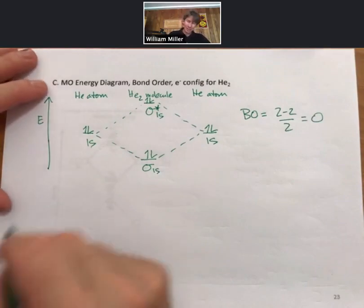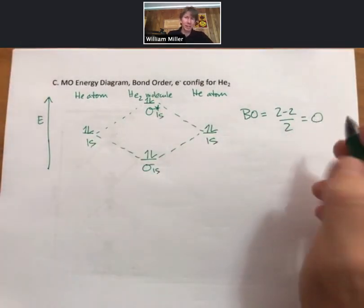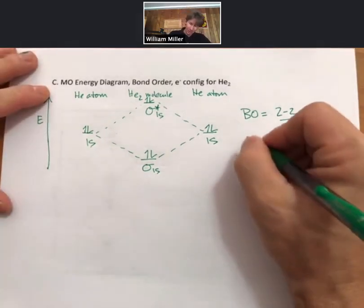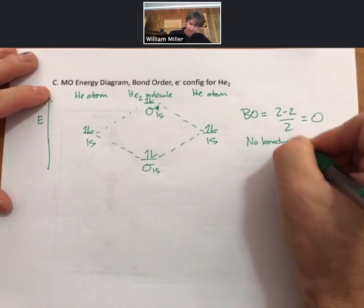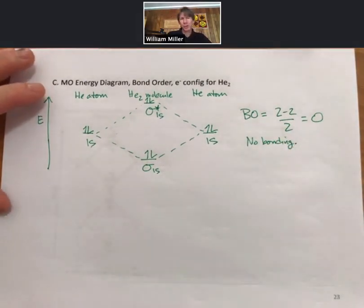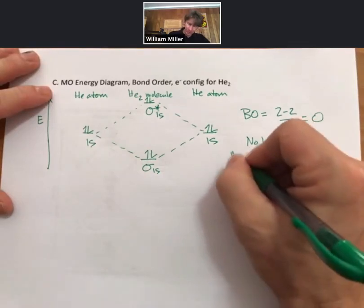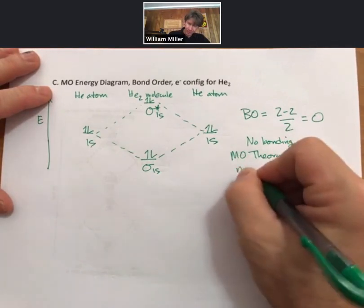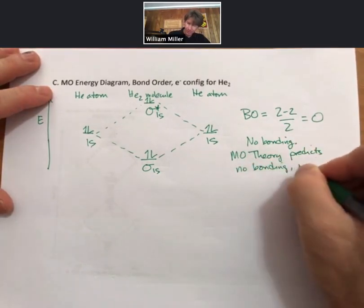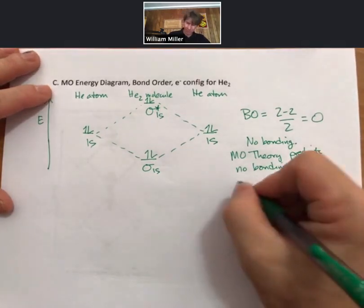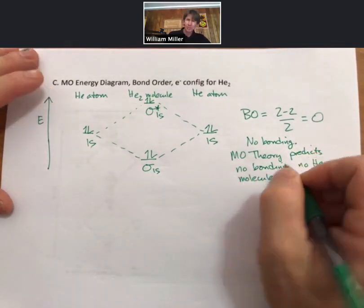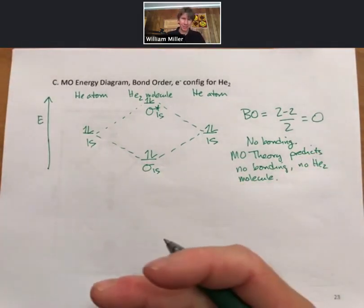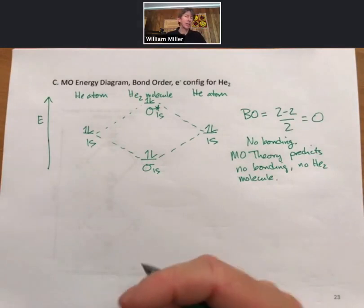When we calculate our bond order, which is bonding electrons minus antibonding electrons divided by two, we get a bond order of zero. A bond order of zero means that there is no bonding, and further, molecular orbital theory predicts no bond or no He2 molecule.